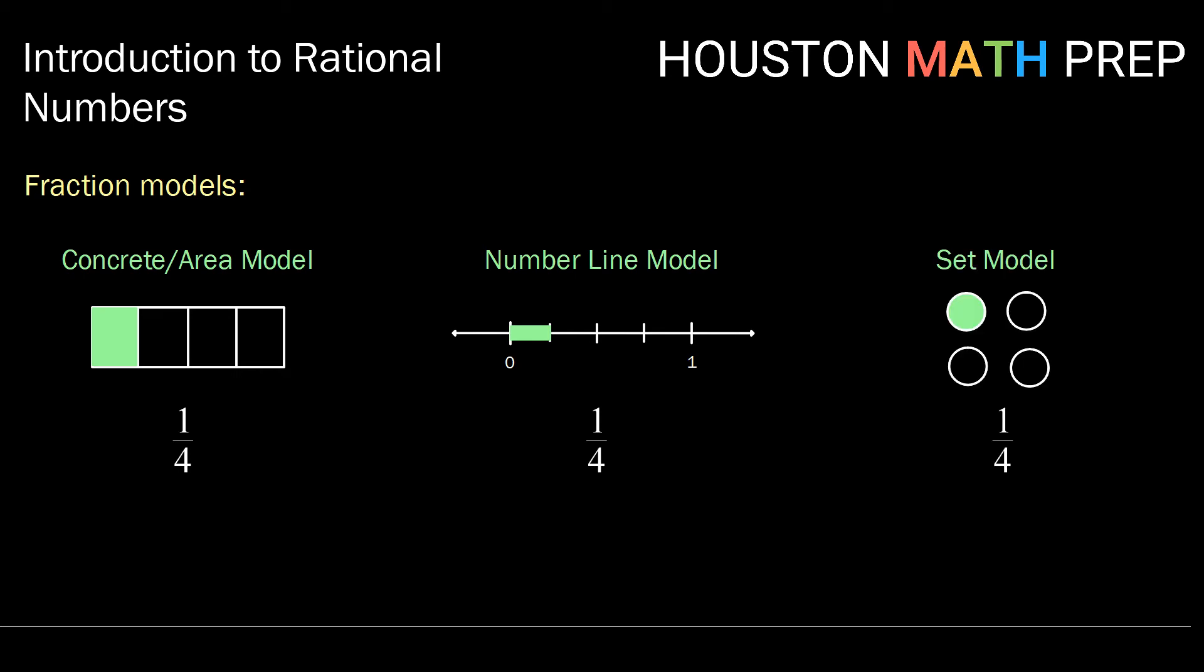A third model we could use is what we would consider the set model. Here, we have four equal sized items, whatever those items might be. In this case, we just have circles. And one of them is shaded. So here we're saying that there are four items in our set, and we have one of them. So here are just three ways that you can model fractions or rational numbers with your students.